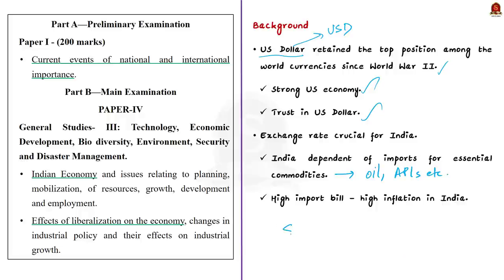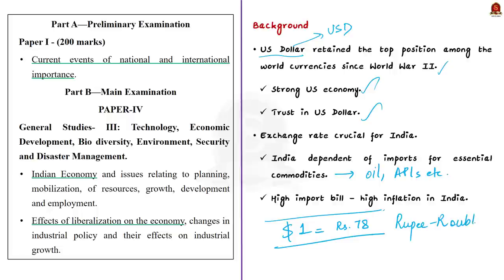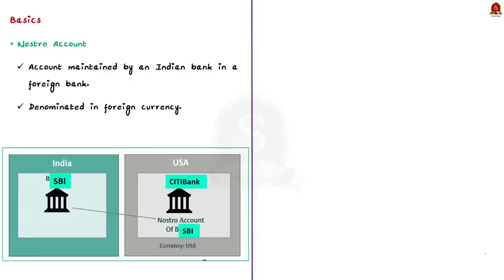The Indian rupee is fast depreciating against the US dollar — currently the cost of USD has crossed 78 rupees — and this is resulting in inflation in India because of the increasing import bill. So to counter this situation, India is taking steps to avoid the use of US dollars in its international transactions, and one such effort is the rupee-ruble route, which will especially enable trade with Russia. To understand the advantages associated with this route, we need to go through some basics — the Nostro account, Vostro account and rupee invoicing.